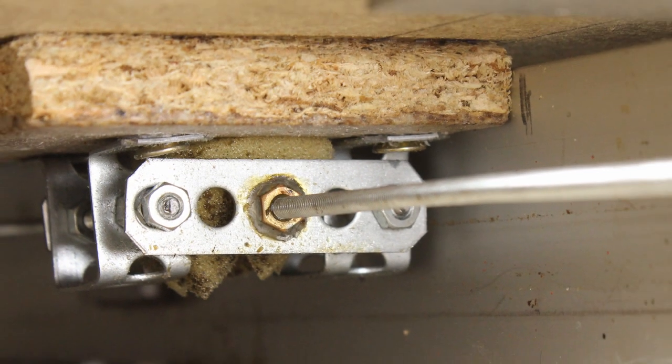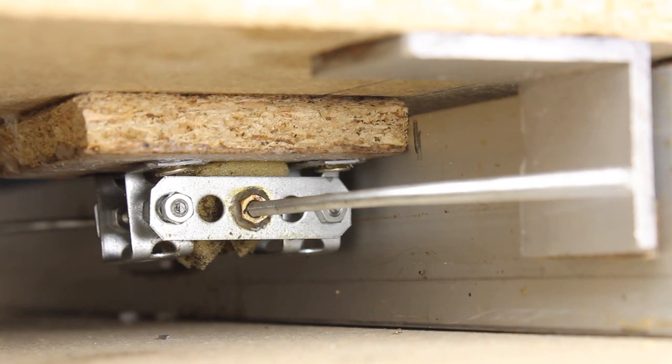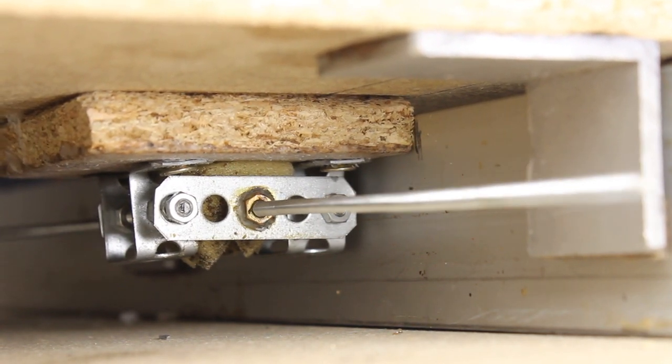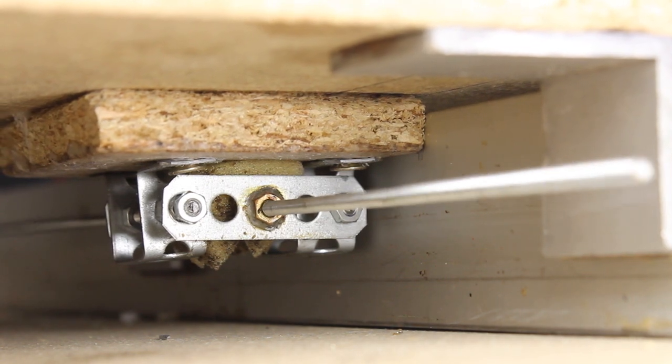The horizontal axes are driven through 3mm threaded rods. On the bottom side of the tables for the X and Y axis there are press nuts soldered on perforated metal stripes.